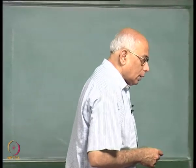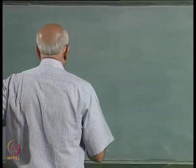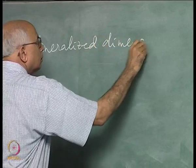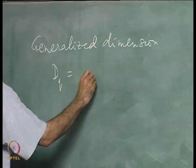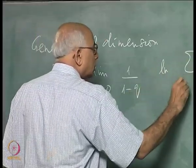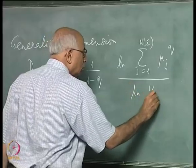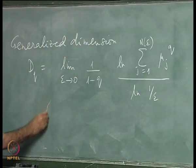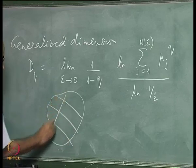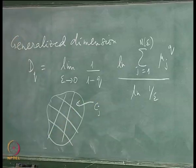Let us go back to where we stopped last time: the logistic map, where we discussed the idea of a generalized dimension. To recall, the generalized dimension D_q was defined as the limit as ε→0 of (1/(1-q)) times the log of the sum over j of μ_j^q, divided by log(1/ε).